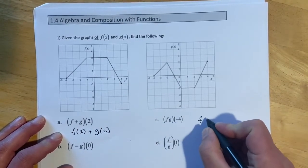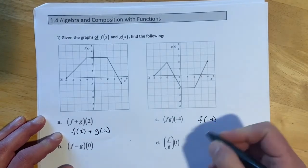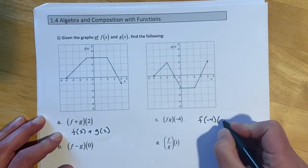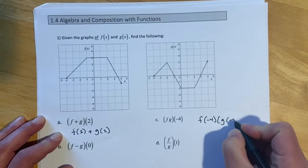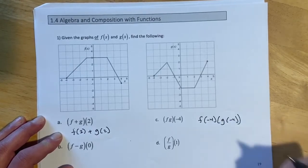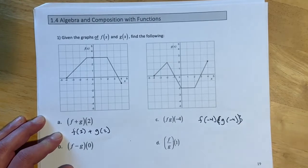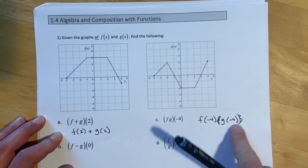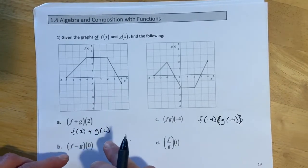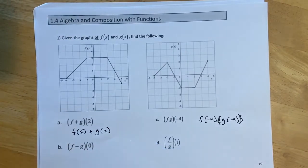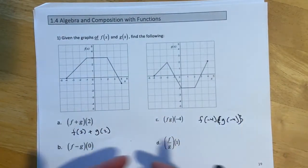This over here means f evaluated at negative 4 times g evaluated at negative 4. Probably don't need that second set of parentheses there. We're just going to figure out what the two values are, and then add them together, multiply them, or divide, or subtract.